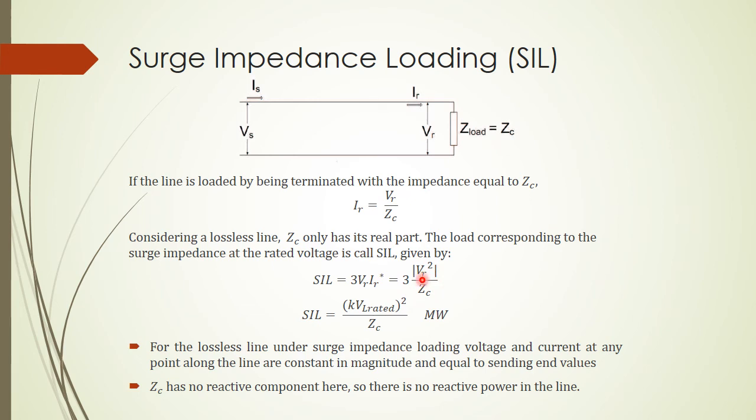Notice that this Vr is the single-phase to neutral voltage. Because this is single-phase voltage, it is actually the line-to-line voltage over the square root of 3. If we square it and multiply by 3, we have the line-to-line voltage. In this case, it is kilovolt rated squared over the characteristic impedance Zc.